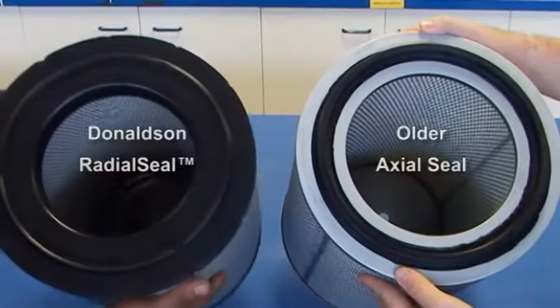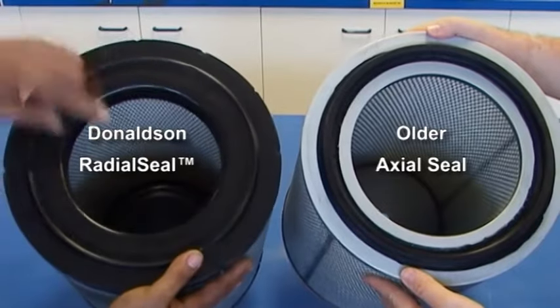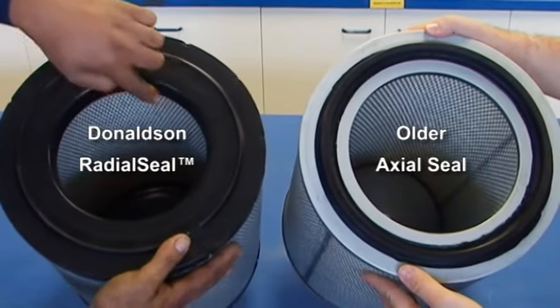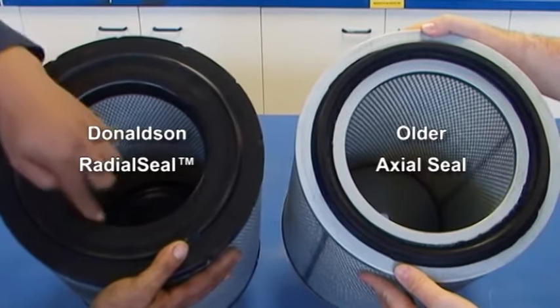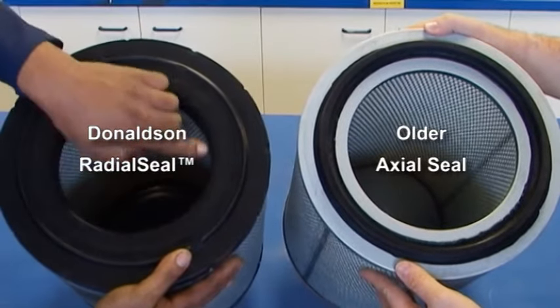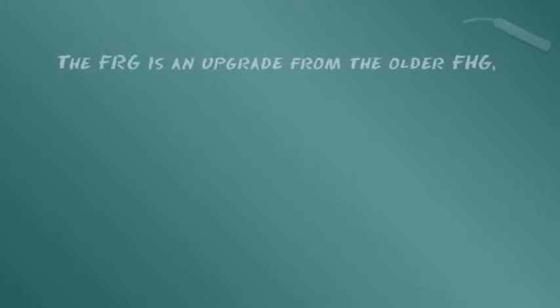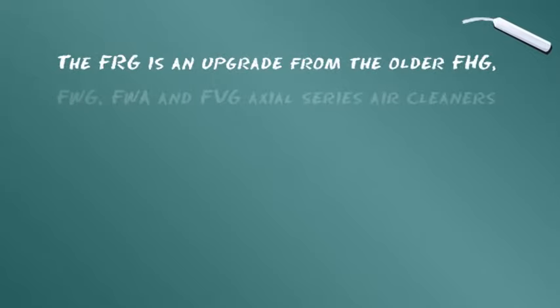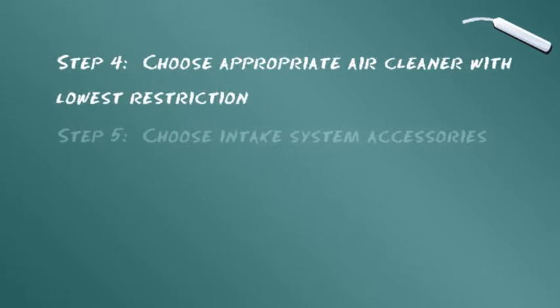Dieser FRG-Filter gehört zu der Filterfamilie, die das neuere, wirksamere und patentierte Design von Donaldson Radial Seal verwendet. Es handelt sich hierbei um eine Aufrüstung der alten Serien FHG, FWG, FWA und FVG mit Axialdichtung.